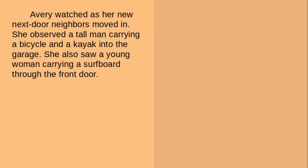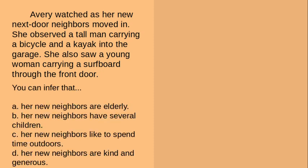Here's the next one. Avery watched as her new next-door neighbors moved in. She observed a tall man carrying a bicycle and a kayak into the garage. She also saw a young woman carrying a surfboard through the door. You can infer that: A, her new neighbors are elderly; B, her new neighbors have several children; C, her new neighbors like to spend time outdoors; or D, her new neighbors are kind and generous. Pause the video, find the text evidence to support one of your answer choices by underlining it or reading it out loud, and don't forget to say how you know.